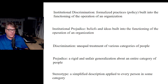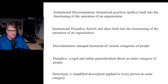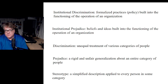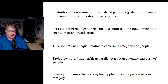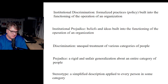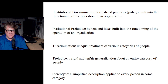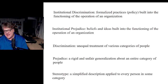Institutional discrimination refers to formal practices or policies. There are examples of institutional discrimination at many points across U.S. history — the law discriminating against a category of people based on race, or the law discriminating against categories of people based upon sexual orientation. That's an example of institutional discrimination.